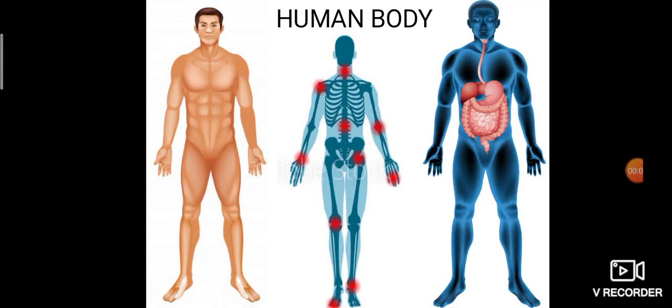Hi children, we are getting into the same lesson on the human body, but today we are not going to see any new organ system. We will just revise the three organ systems we have seen in the last classes: skeletal system, muscular system, and digestive system. Today we will recall these systems.